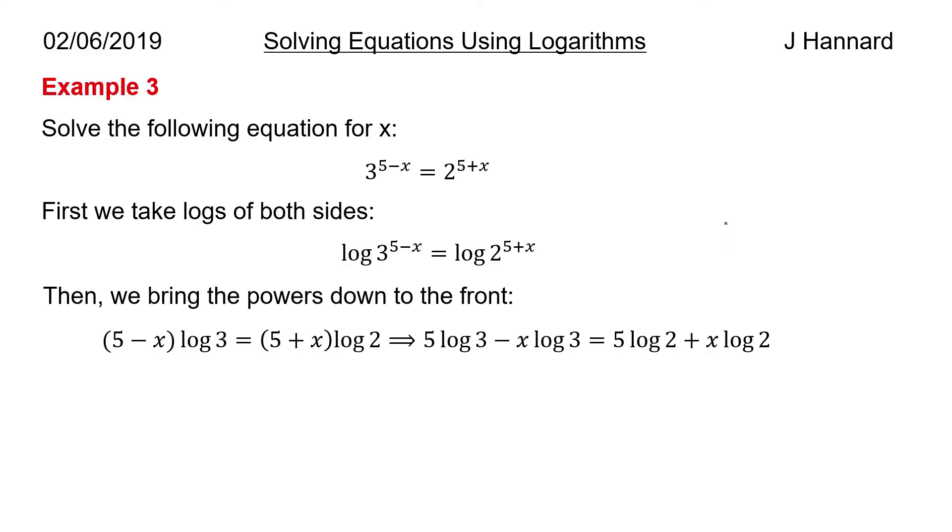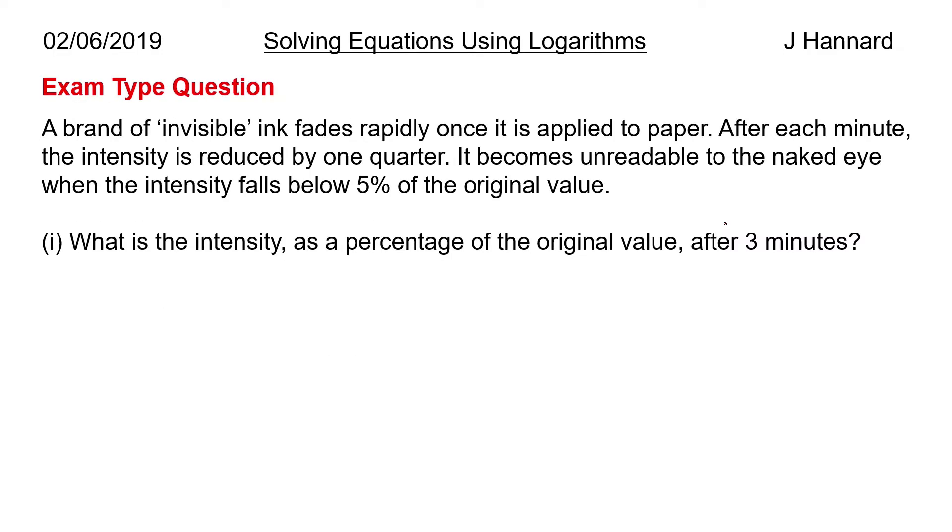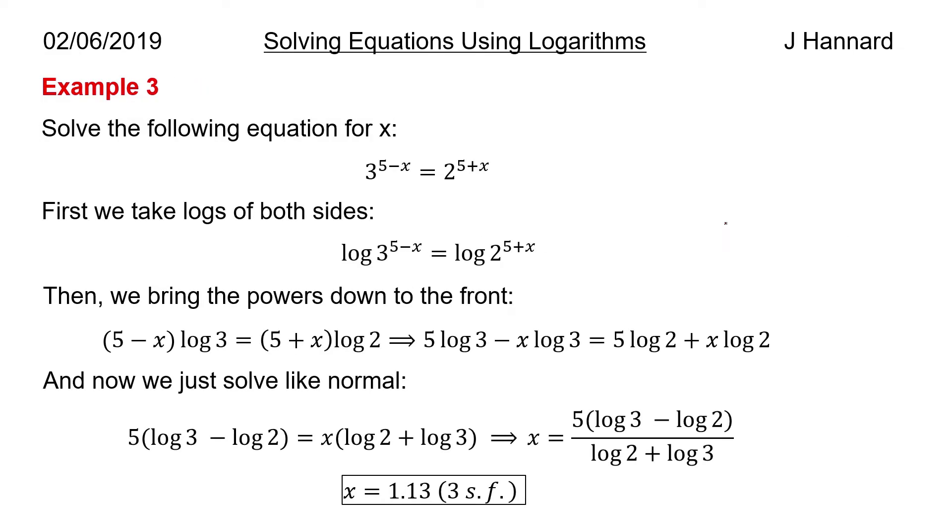And therefore 5 log 3 minus x log 3, just expanding the bracket, equals 5 log 2 plus x log 2. Just solve the equation like normal, so what I did is take the x over to join his buddy, take the 5 over to join his buddy, and then factorize out. So we get 5 log 3 minus log 2 equals x log 2 plus log 3. Then divide both sides by log 2 plus log 3, and we get x equals, get ready for it, 5 brackets log 3 minus log 2 all over log 2 plus log 3, and then x equals 1.13 to 3 significant figures.